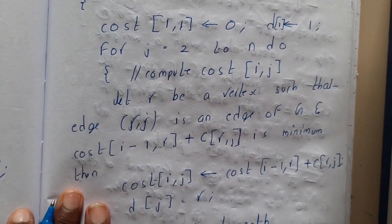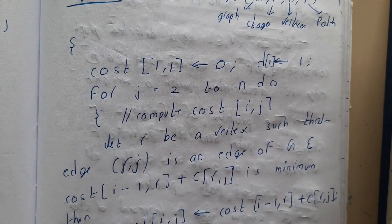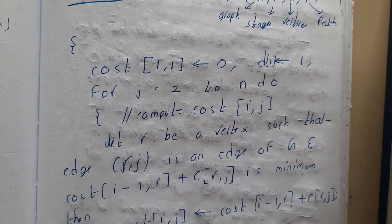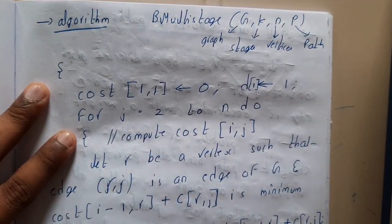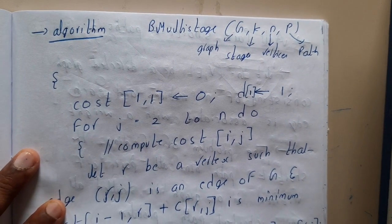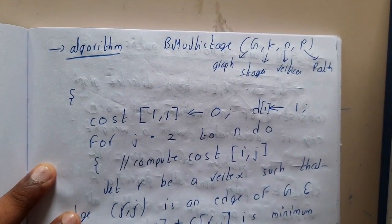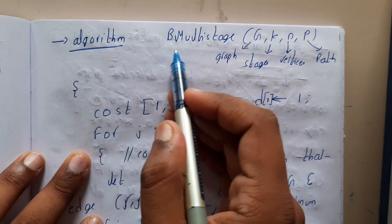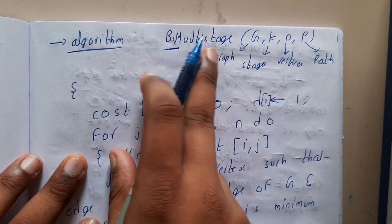I hope everyone got a clear idea on the forward approach. If you are confused anywhere, just take an example and try to trace it. It might take some time to understand, but once you get the idea you will never forget these algorithms because they are really easy once you get the logic.